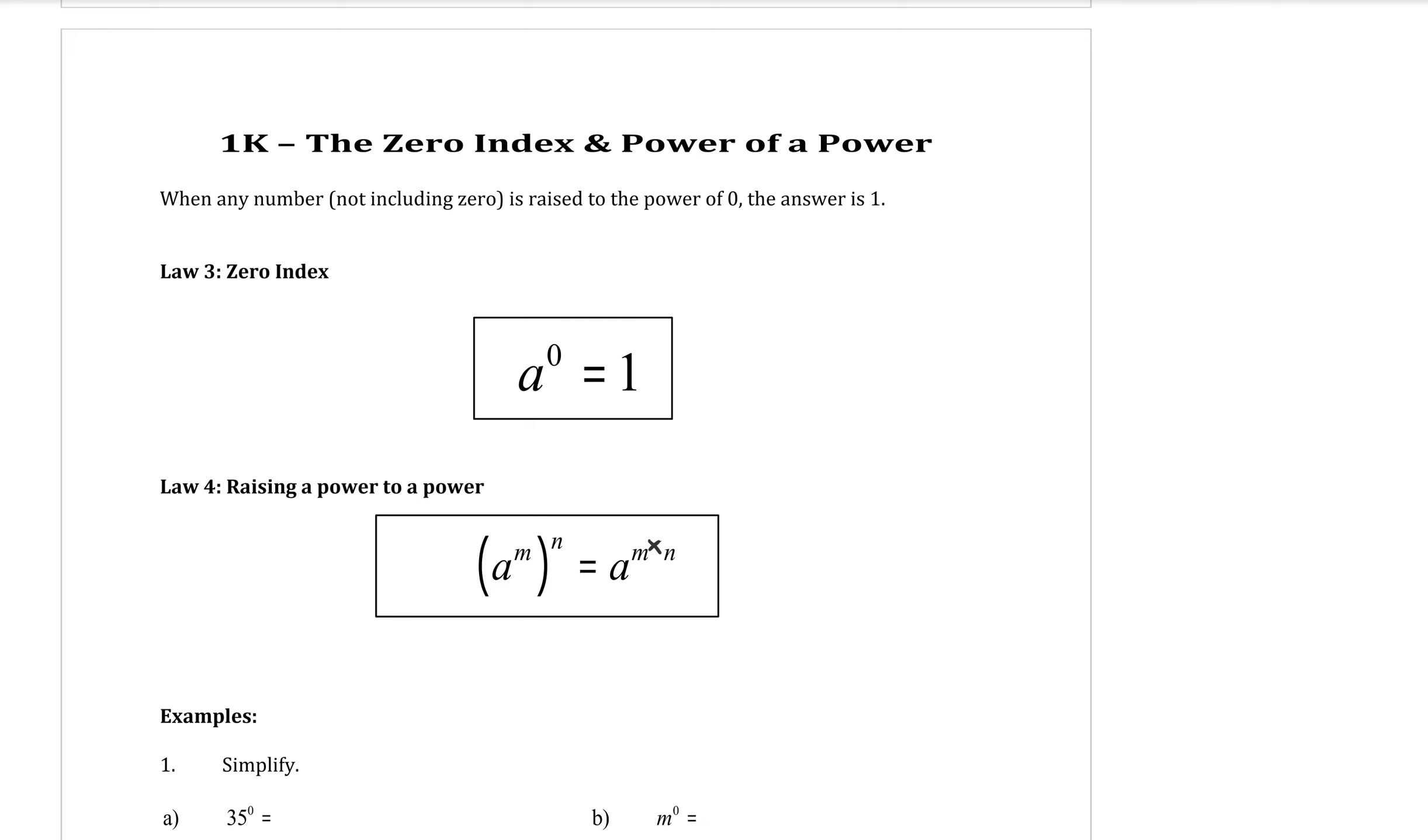So anything to the power of zero is always equal to one, always. That's this first rule here. Anything, any base to a power of zero is going to be equal to one. Doesn't matter what it is. We'll always equal one. That's your first law for today.